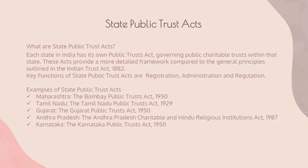In Andhra Pradesh, the Charitable and Hindu Religious Institutions Act of 1987 oversees both public charitable trusts and Hindu religious institutions, ensuring proper registration, management of properties, and administration. Likewise, in Karnataka, the Karnataka Public Trust Act of 1915 regulates public charitable trusts, concentrating on registration, administration, and ensuring they operate for public benefit. These acts play a crucial role in ensuring transparency, accountability, and proper functioning of public charitable trusts in their respective states.